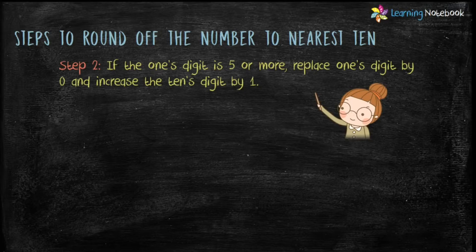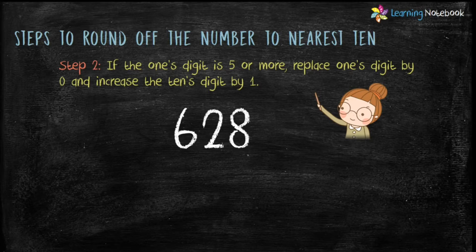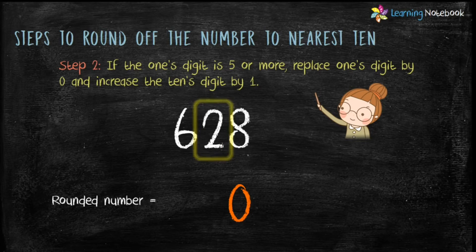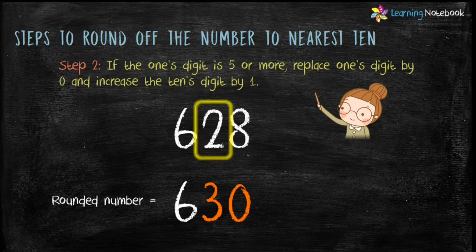Step 2: if the one's digit is 5 or more, replace the one's digit by 0 and increase the tens digit by 1. For example, the number is 628. Here the one's digit is 8, which is greater than 5. So first replace 8 by 0, then increase the tens digit, which is 2, by 1 — 2 plus 1 equals 3. Keep the remaining digits as they are. Therefore the rounded number is 630.